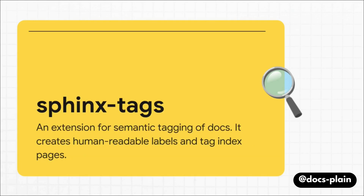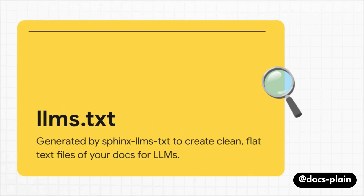Next, we've got an extension called Sphinx Tags. This tool is all about organizing things semantically. It lets you add really clear, human-readable tags to all of your pages. This isn't just for show — it helps users find related content, and it even automatically creates handy index pages for every tag, opening up totally new ways for people to explore your docs.